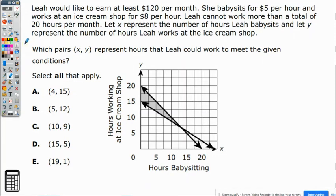This is an Algebra 1 sample question number 9 part B. This is part B of number 9 that we started last time. This one is still Leia who wants to earn at least $120 per month. She babysits for $5 an hour and works in an ice cream shop for $8 an hour. However, Leia cannot work for a total of 20 hours per month, so she cannot work more than that.